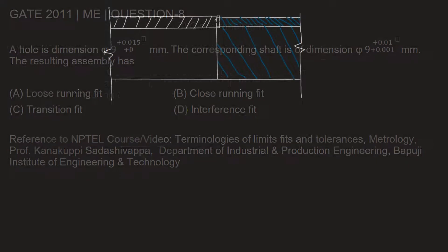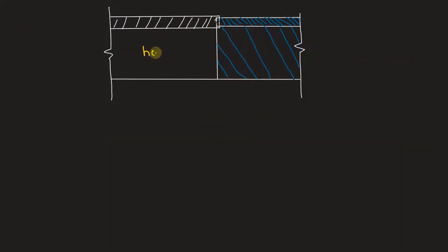see what the answer is. In this figure, this denotes a hole and this is a shaft. We can see as the tolerances are marked, upper tolerance of hole is 0.015 millimeters, lower is 0 millimeters.